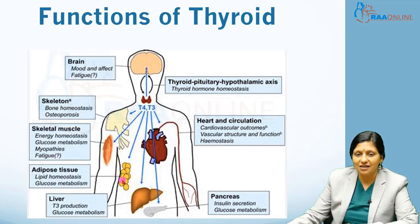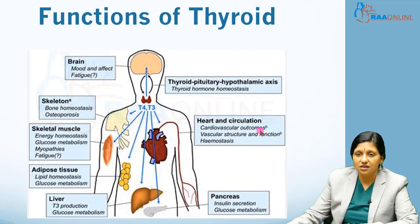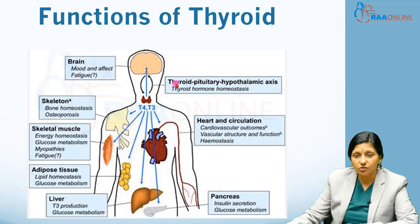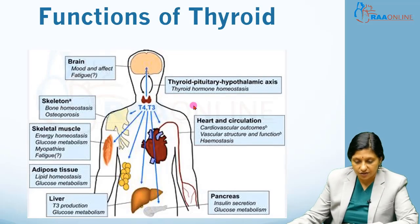The adipose tissue lipid homeostasis and glucose metabolism is maintained by thyroid hormones. In the liver, T3 production and glucose metabolism is mediated by thyroid hormones. In the pancreas, insulin secretion and glucose metabolism is mediated by thyroid hormone. The cardiovascular system outcomes, vascular structure and function, and homeostasis are also maintained by thyroid hormones, and there is also a thyroid-pituitary-hypothalamic axis for control of thyroid gland secretions.